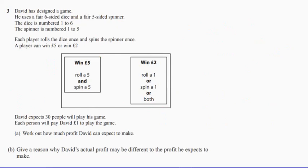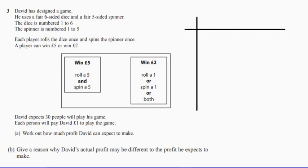Question three. The art of probability is really just choosing the right method. Not the only way of doing this question, but I think the easiest way to do this particular question is to draw yourself a sample space diagram.